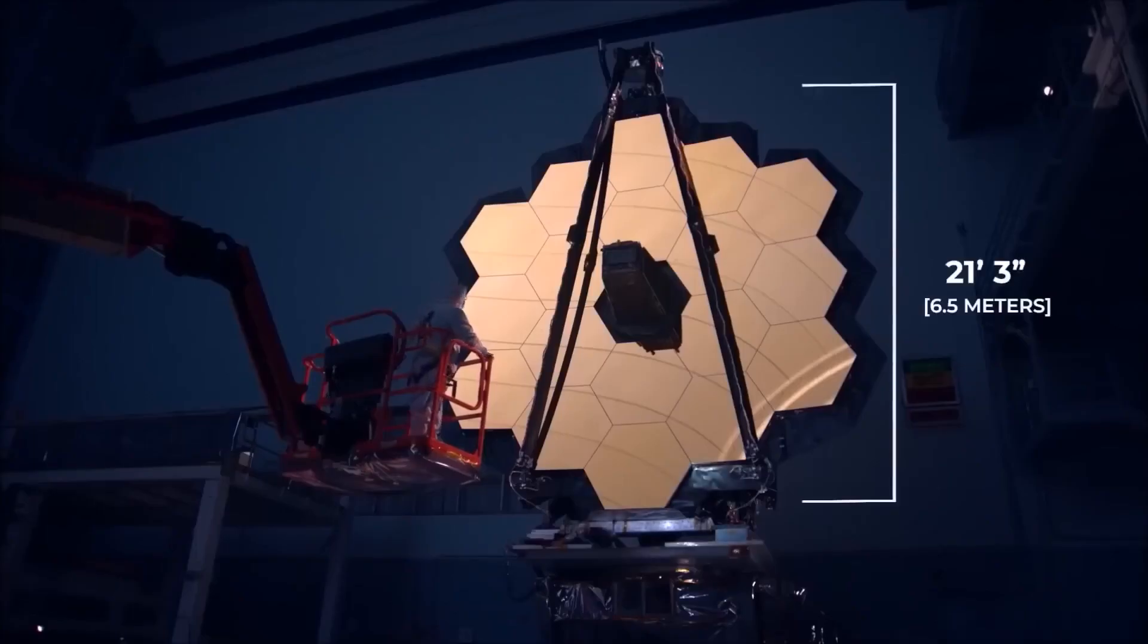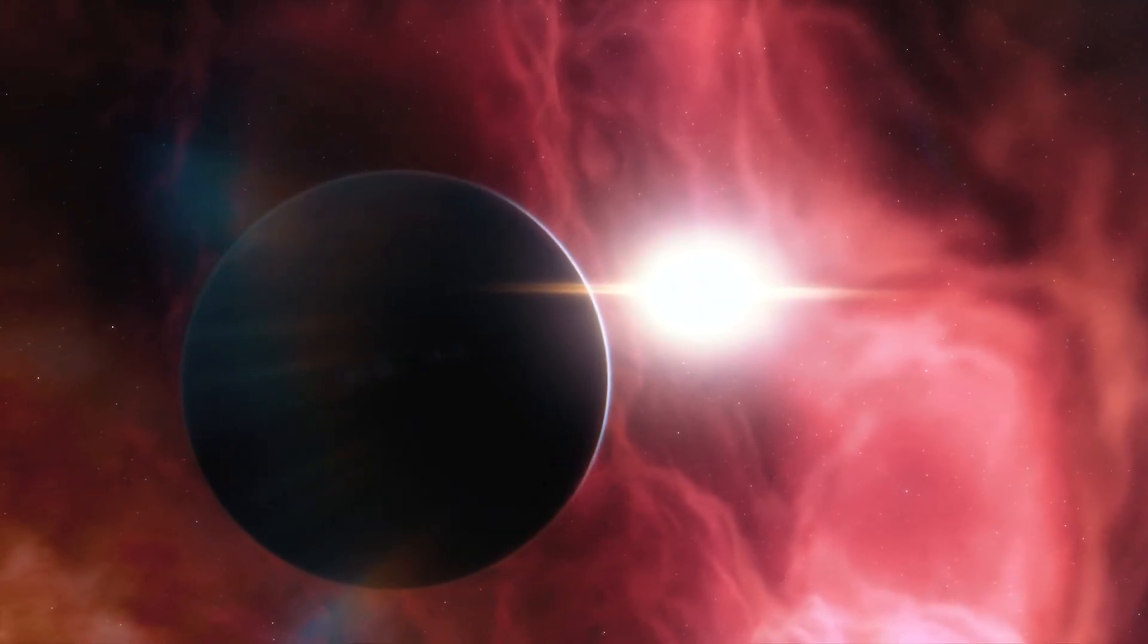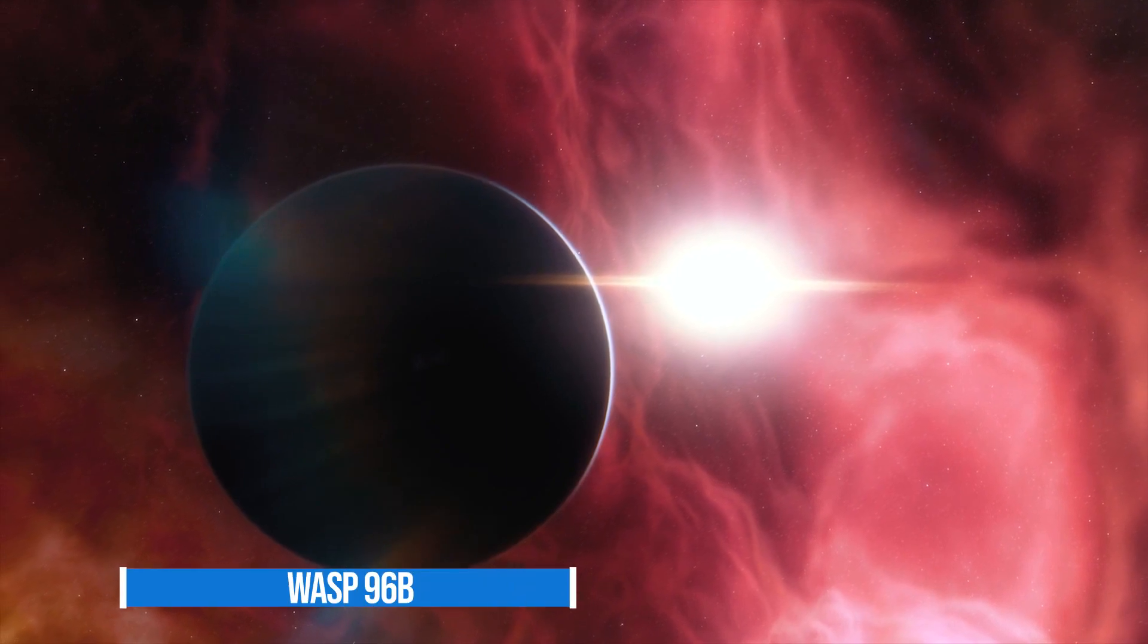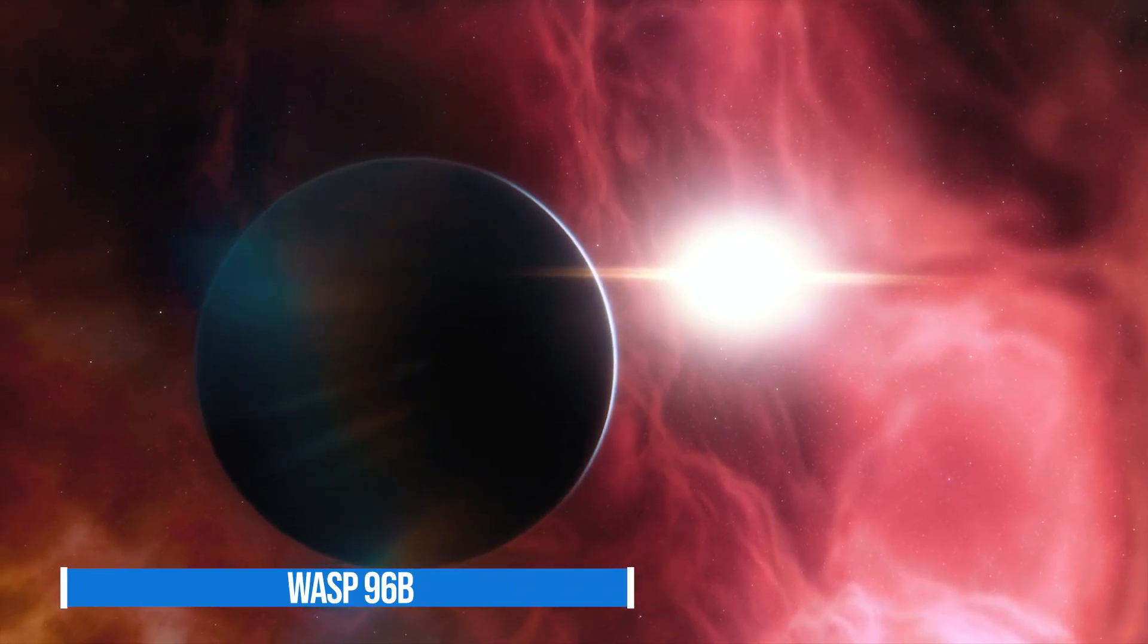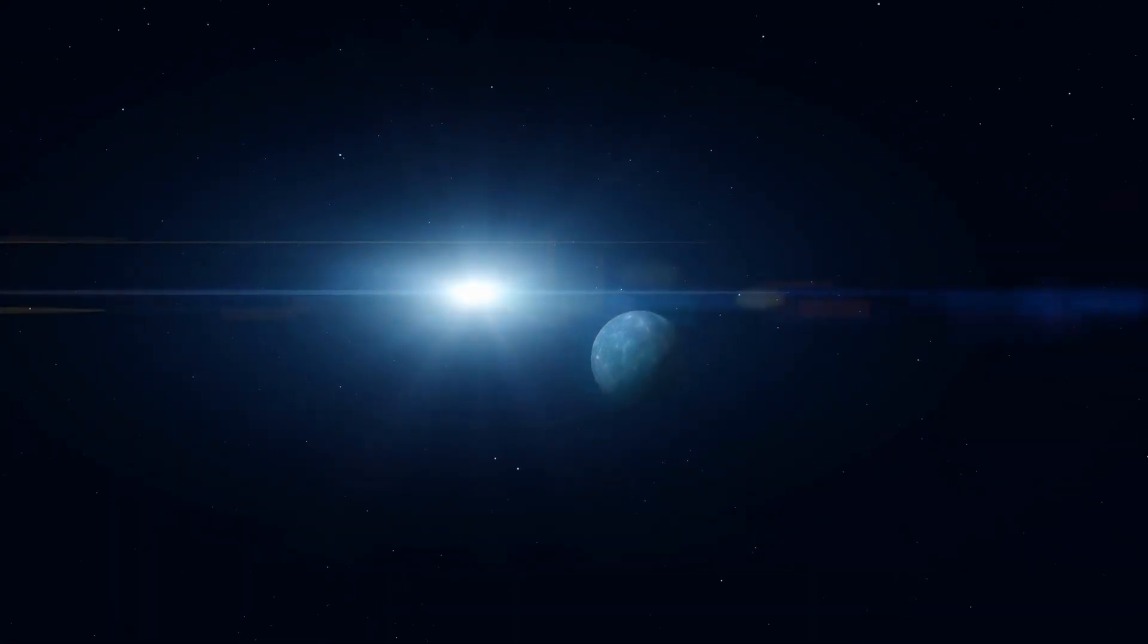The Webb Telescope, which was built with a 21-foot mirror more than two and a half times larger than Hubble, allows incredible views into those distant planets like WASP-96b, the space agency said. Webb's immediate and more detailed observations mark a giant leap forward in the quest to characterize potentially habitable planets.